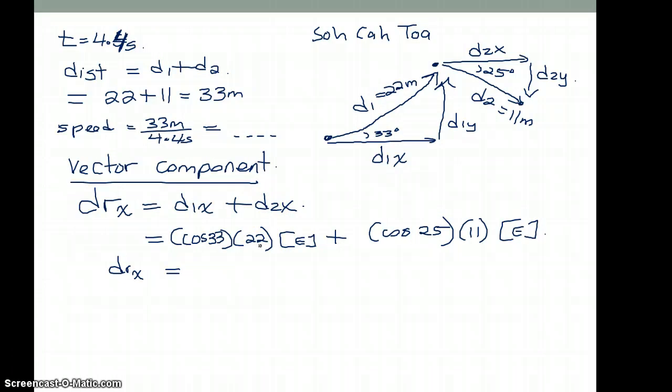We end up with a d resultant in the x component. Because both of them are going in the east direction, we're going to add the two vectors together. So we get cos of 33 times 22, which is 18.45 meters going east, plus cos of 25 times 11, which is 9.97 meters also going east. We add the two together and get 28.42 meters going in the easterly direction.